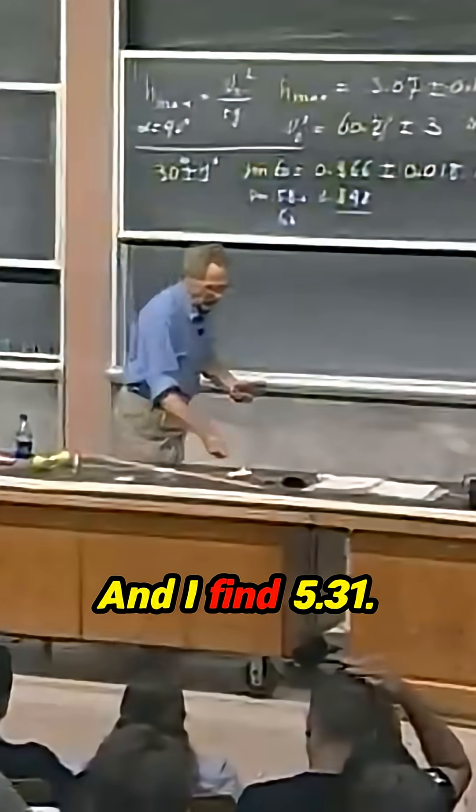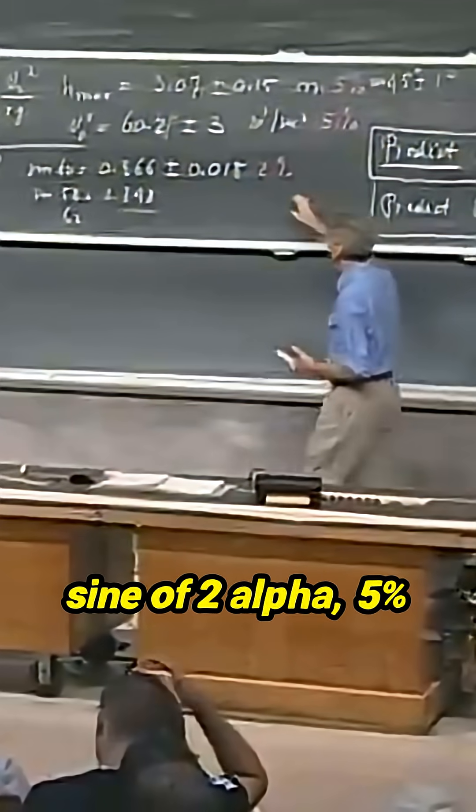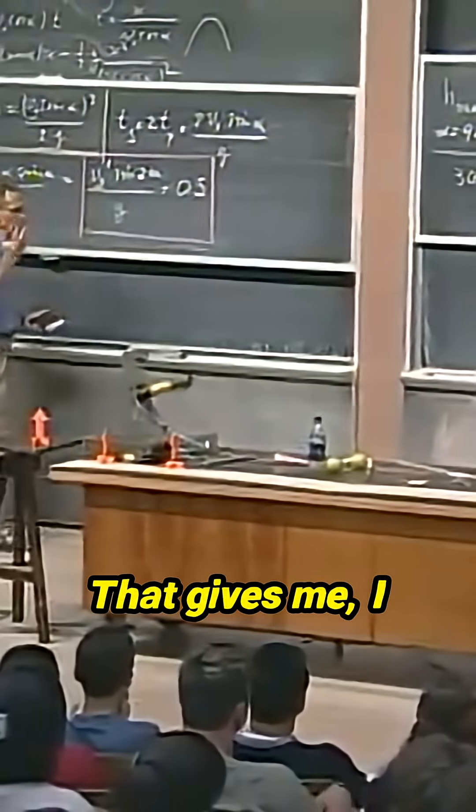And I find 5.31 plus or minus. Now, 2% error in the sine of 2 alpha, 5% error in v zero squared.